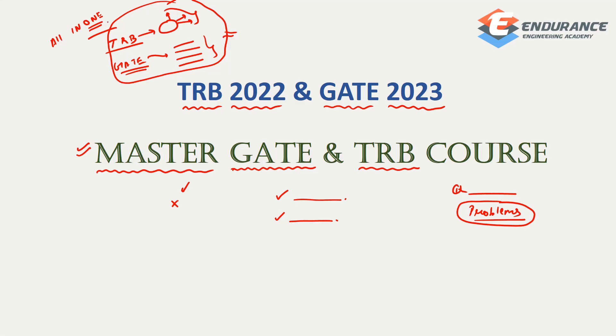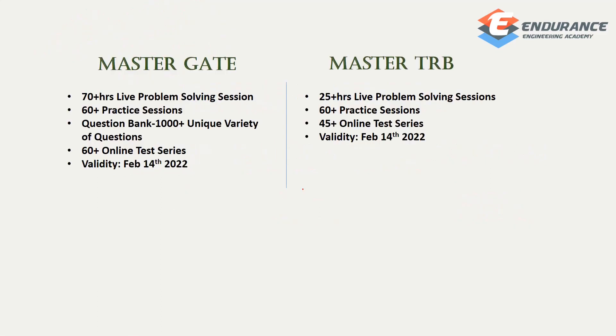If you have already registered for the TRB all-in-one course, you are already a student of Endurance Engineering Academy, and all services will come to you. If you are enrolled in Master GATE and Master TRB course, you will get all of those benefits. If you have already registered in the all-in-one course, you don't need to worry about the Master GATE and Master TRB course separately.